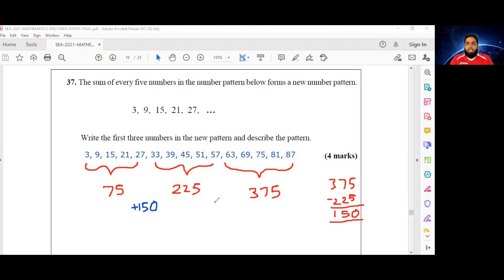Okay, so the first three numbers of the new pattern are 75, 225, and 375, and the pattern is that 150 is being added to each subsequent term.